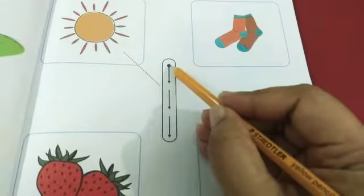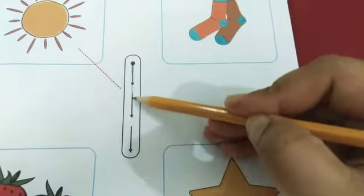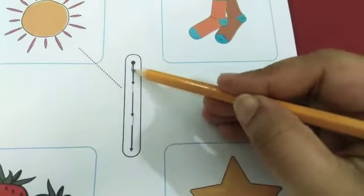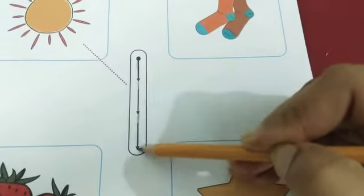Put your pencil on the starting point. One is come down and down. Okay.